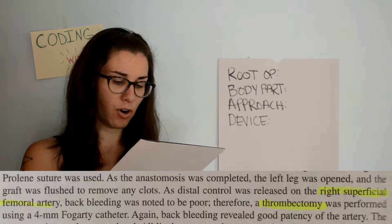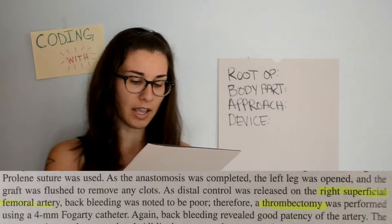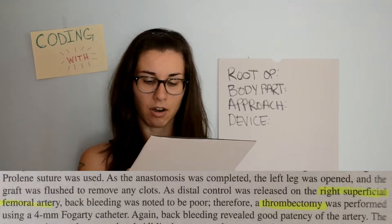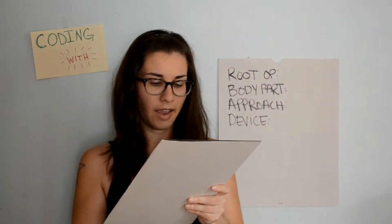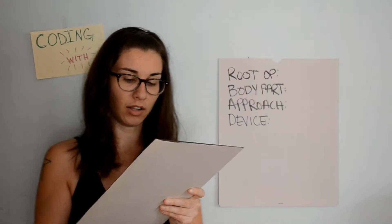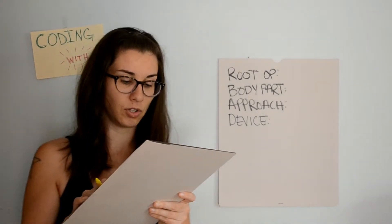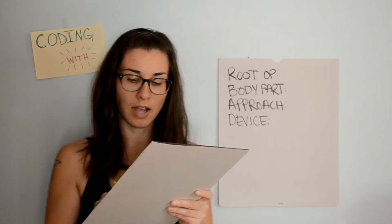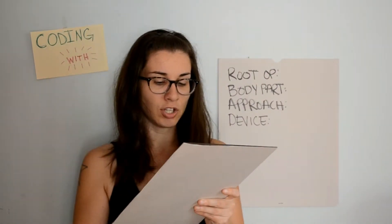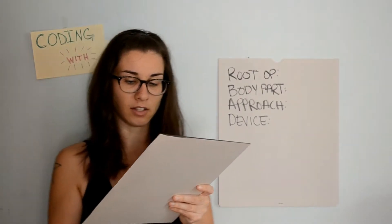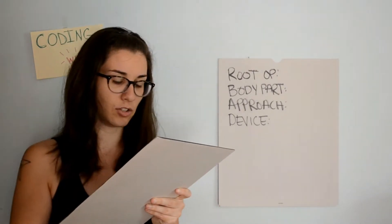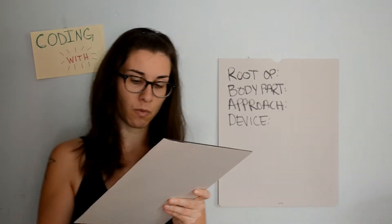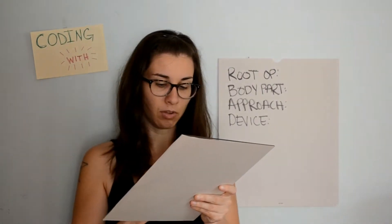A thrombectomy was performed using a four-millimeter Fogarty catheter, after which good patency of the artery was revealed. The anastomosis was then completed, all liga loops were removed, and there was noted to be good flow through both the graft and the right lower extremity with good Doppler pulses. The groin incisions were closed in two layers and the skin was closed with interrupted nylon suture. Dressings were placed and the patient was removed from the operating room in stable condition.